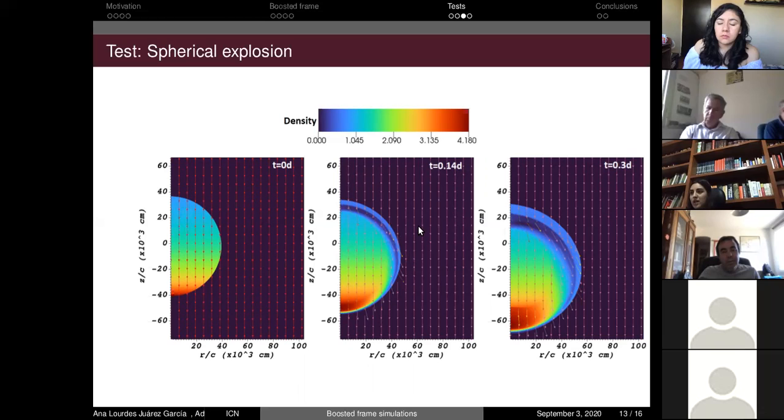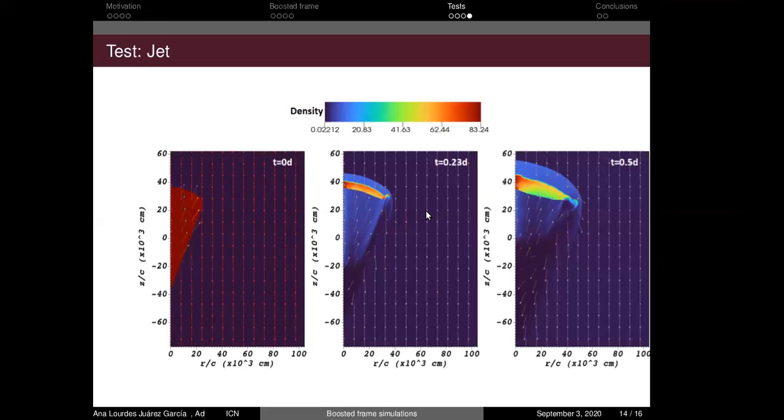My final test is a conical jet that moves with a Lorentz factor of 10 in the lab frame and in the boosted frame moves with a Lorentz factor of three. The same as the sphere, we can see that inside of the jet we don't have radial velocities that we're supposed to have in the lab frame, and that is because we are changing between systems.